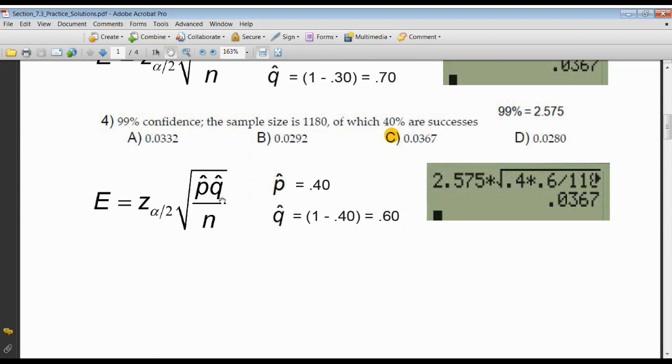Four is identical in that I'm asking you to find the error. Now we want to have a 99% confidence level. So the Z score that's associated with 99% is 2.575. P hat is given to me at 40%. But we have to change that to a decimal, 0.40. Q hat is 1 minus that, 0.60. Because of the 0s in the 100s place, I can just simply put 0.4 times 0.6. The 0 is not needed. Divided by N, which is given to me as 1180. And once again, you can see the correspondence, 0.0367, letter C.